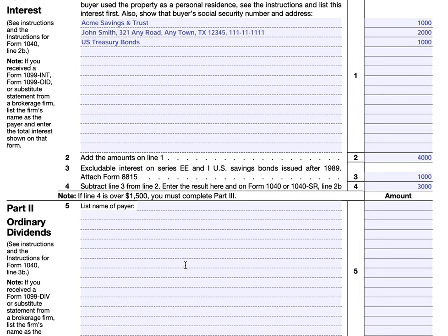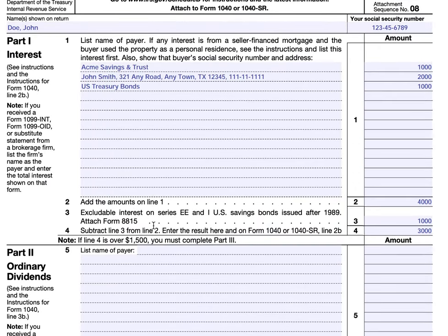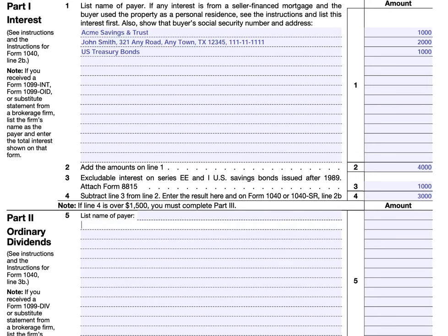In part two we'll report ordinary dividends in a very similar fashion. If you had more than 10% of either the value of a foreign corporation's stock or the combined voting power of that corporation's voting stock, then you might also need to file IRS Form 5471 and follow those instructions. Ordinary dividends are reported in the same manner as interest income from part one, but this is from ownership of companies paying dividends as opposed to ownership of interest-paying instruments such as bonds and CDs.